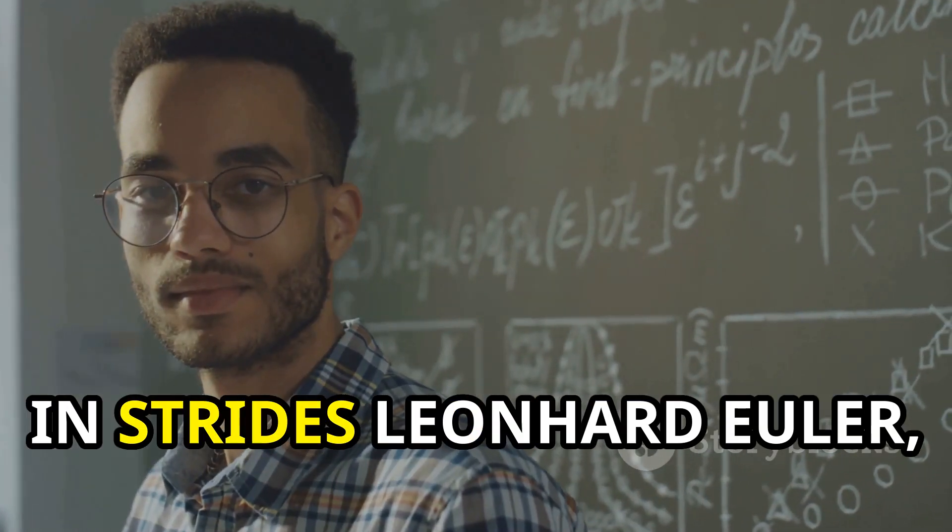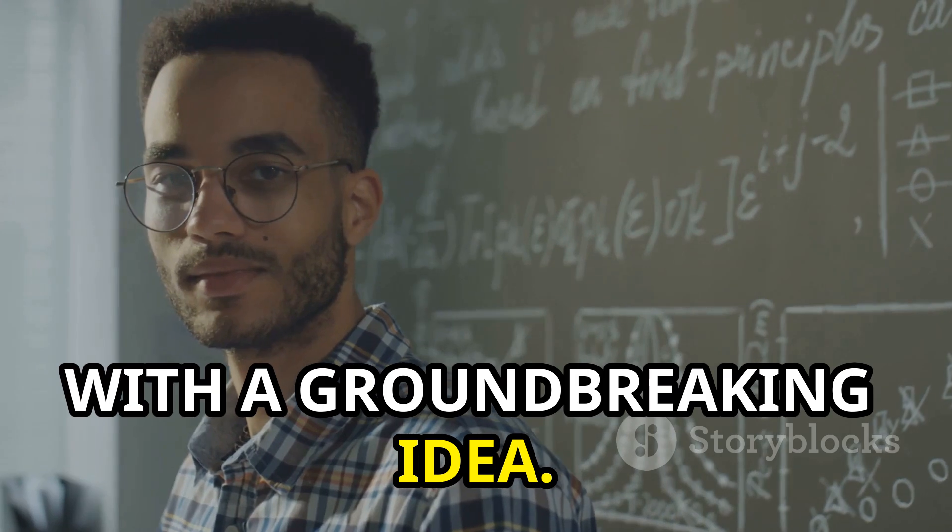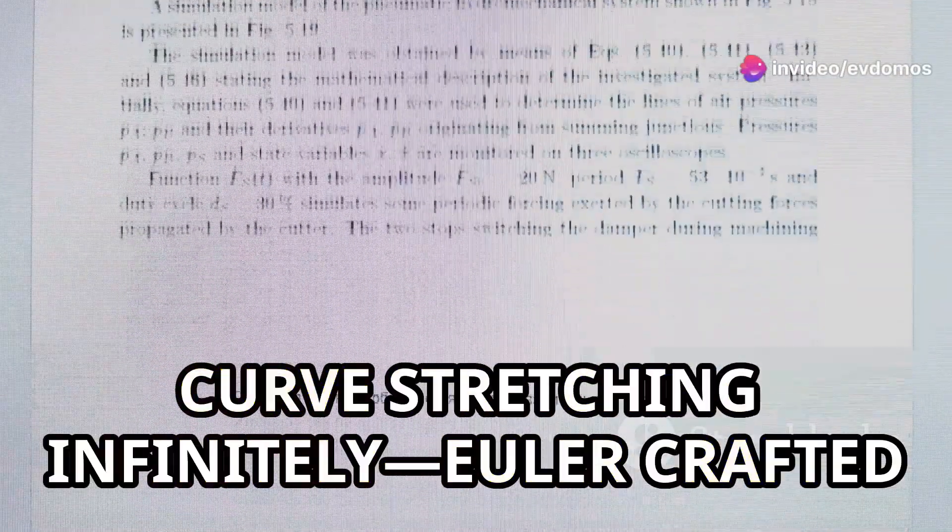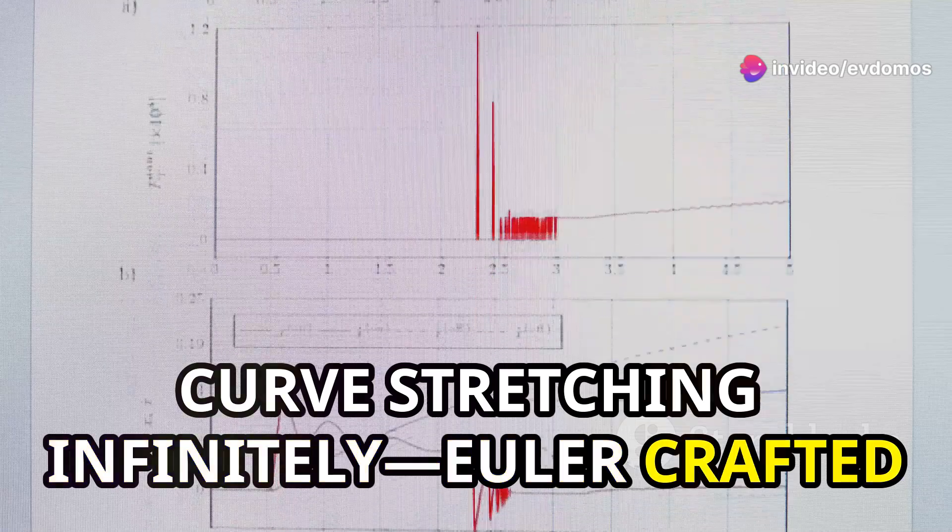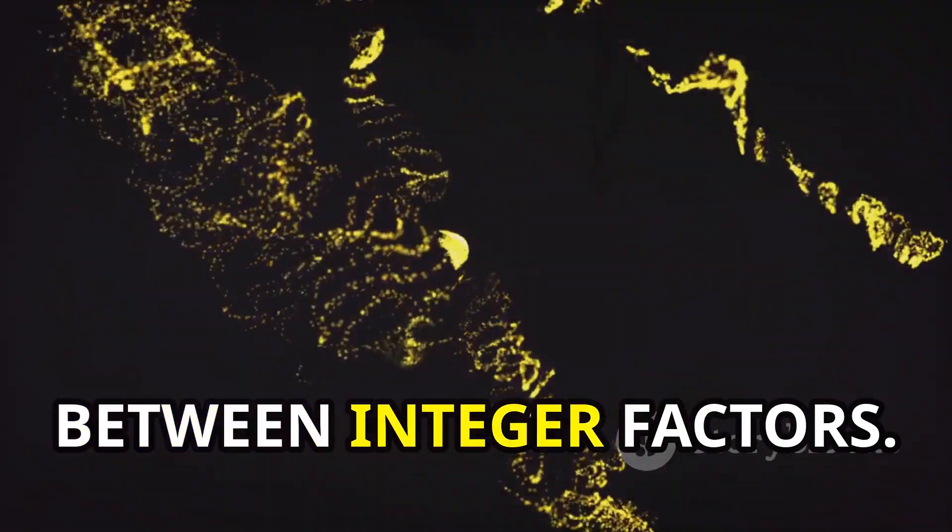And then, in strides Leonhard Euler, around 1729, with a groundbreaking idea. Using an improper integral, the one that calculates the area under a curve stretching infinitely, Euler crafted something extraordinary. He found a way to fill in the gaps between integer factors.